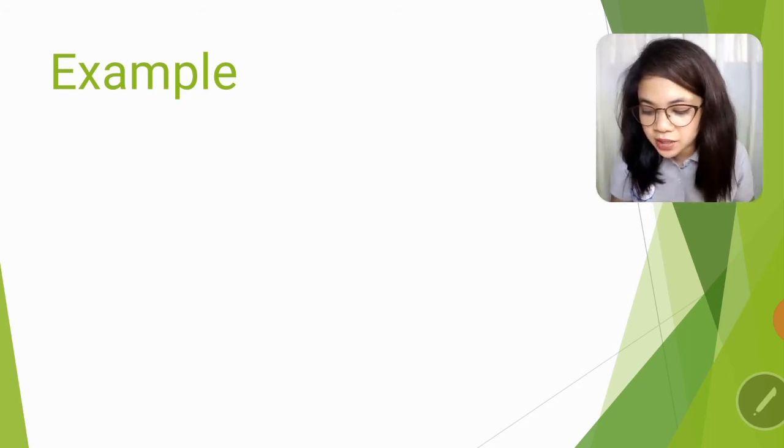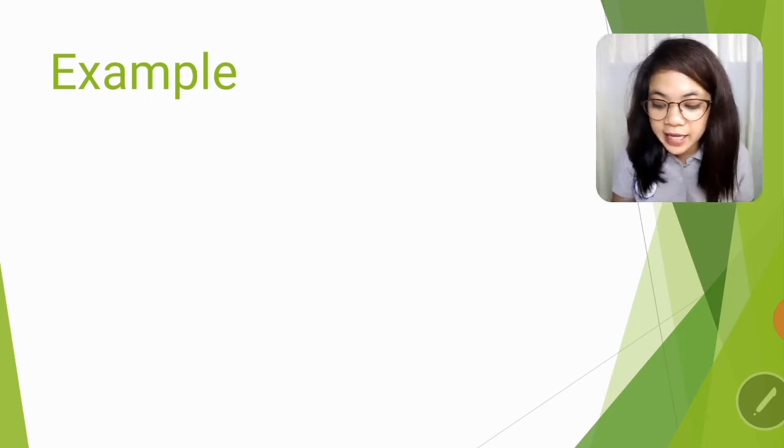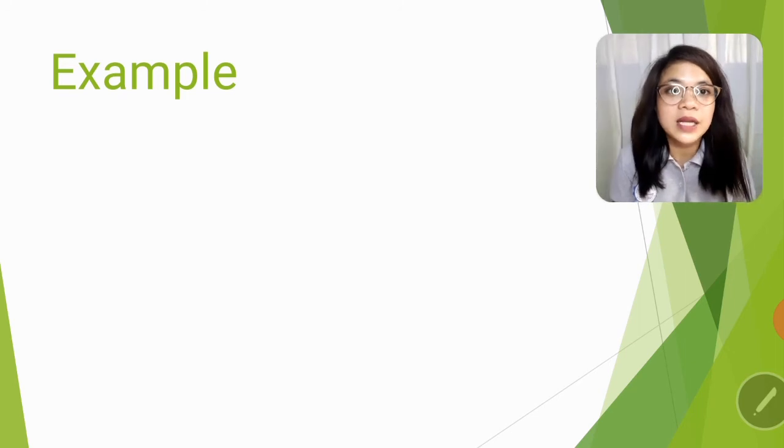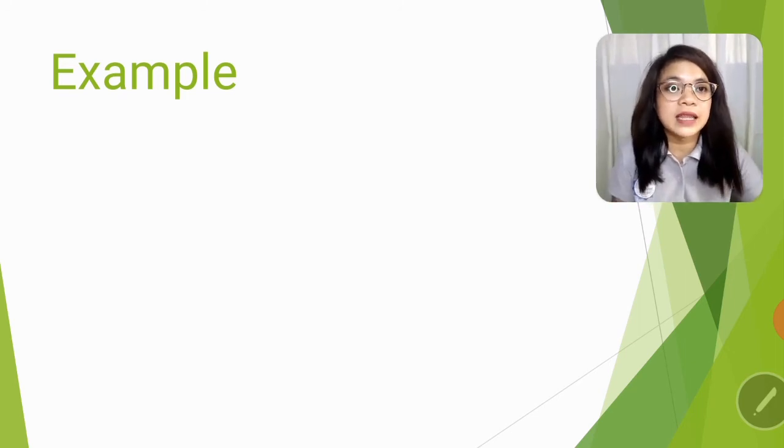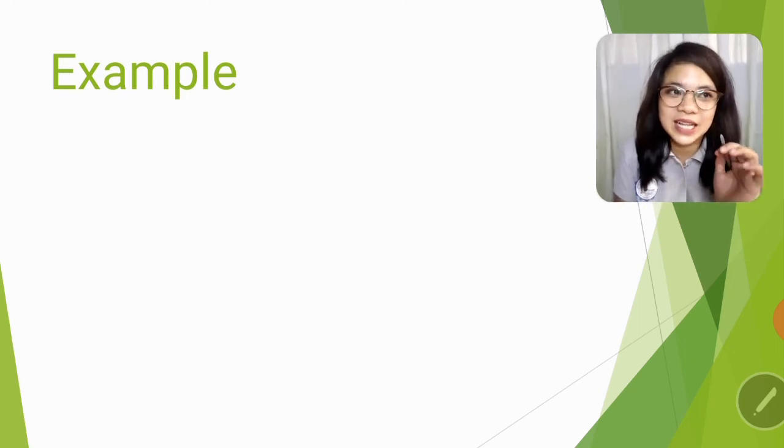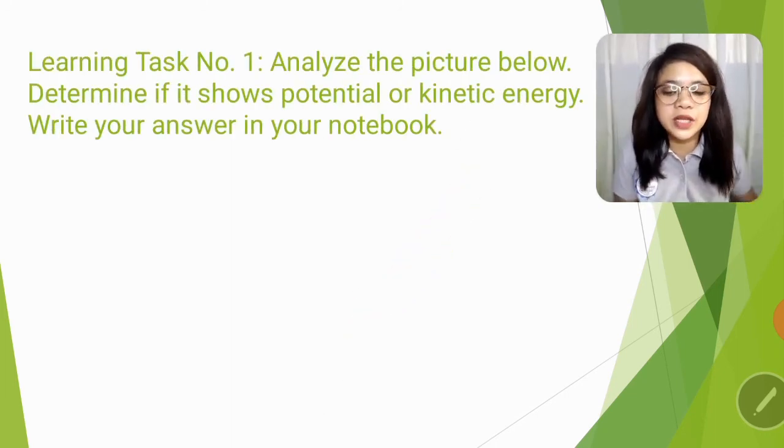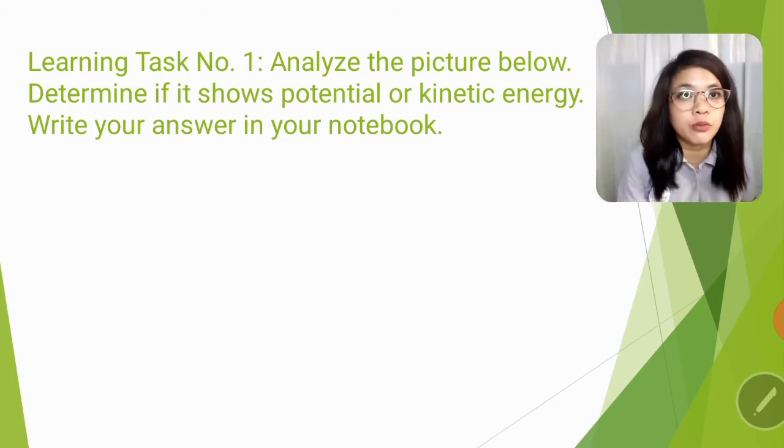For moving objects, you can calculate kinetic energy using the formula K is equal to one half mv squared. So gano'n sabi ko kanina, magkaiba ang formula ni kinetic energy at ni potential energy. I hope you got it. Sana nag-get yun. Okay, so let's proceed with the different learning tasks on your module.